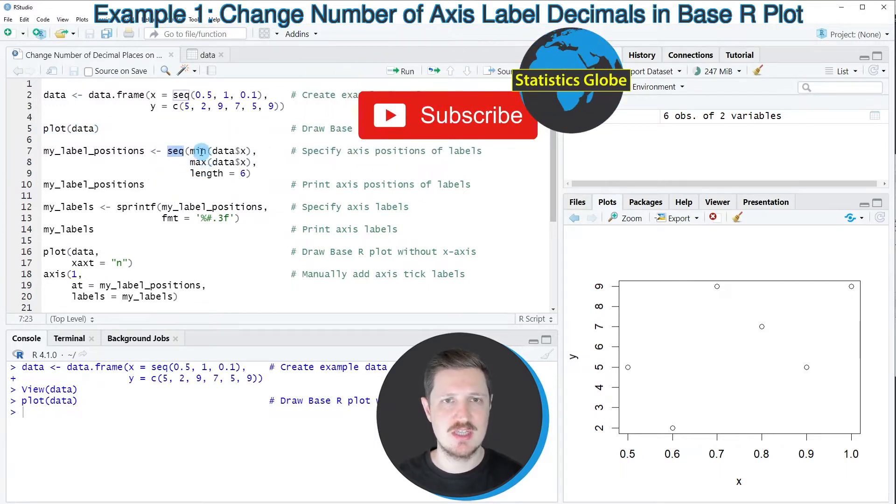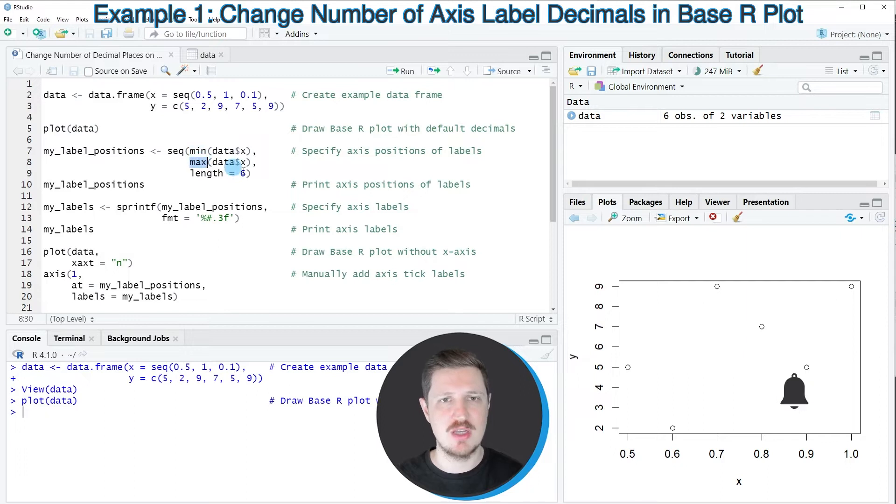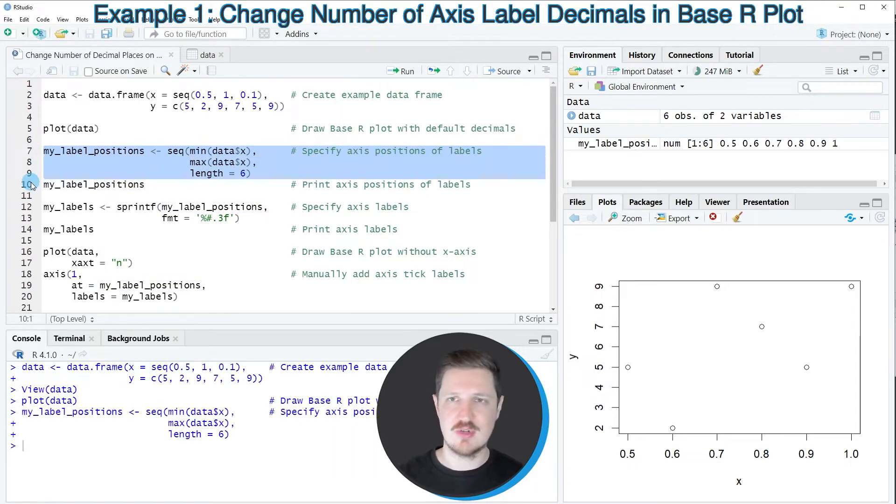And we can do that using the seq function in combination with the min and max functions. And I'm applying these functions to our data frame column x. And I'm storing the output of this in a new data object that I'm calling my_label_positions. So after running lines 7 to 9 of the code, our new data object is appearing at the top right.